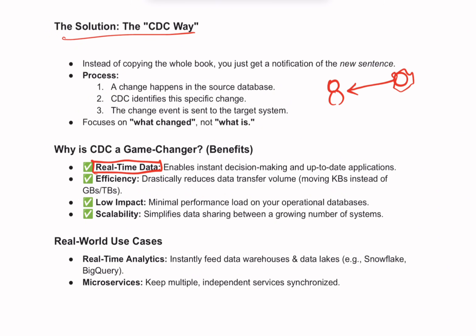Secondly, CDC dramatically reduces the amount of data being transferred. Instead of moving terabytes, you might only be moving a few kilobytes or gigabytes of changed data, which saves network bandwidth and computing power. Previously you might be sending terabytes repeatedly every hour, but with this approach you can drastically reduce data transfer. Next is reduced system load — because you aren't constantly querying the entire database, it reduces the performance impact on your primary operational systems.